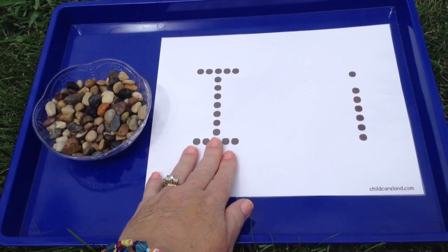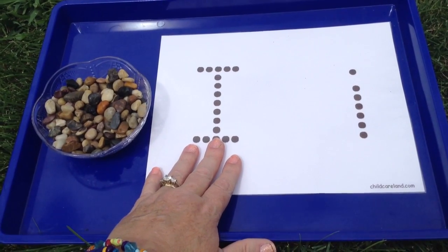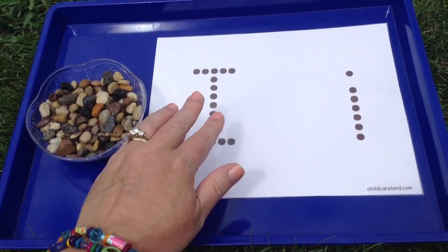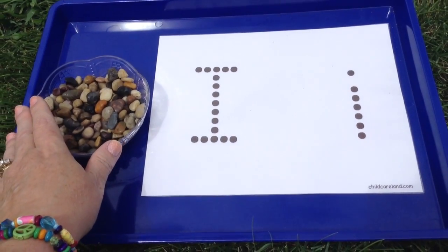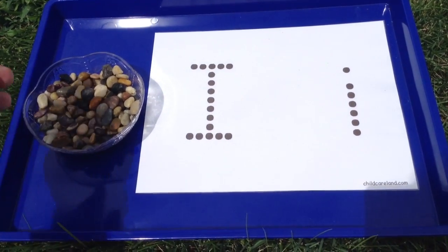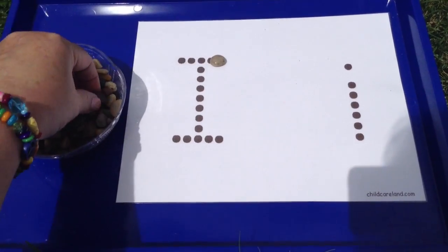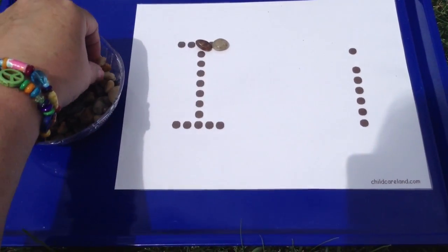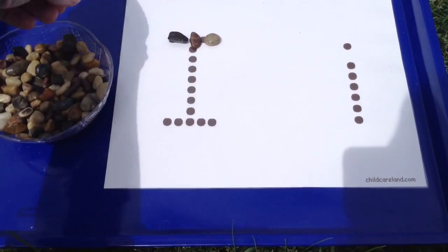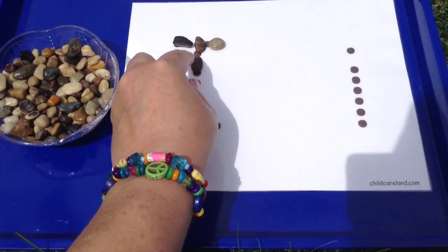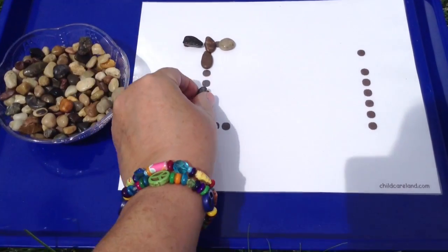So then we have our tracing mat, letter mat, attached to our tray. And then we have a bowl full of rocks. The children would come to the area and begin to pick up their rocks and then fill in the letter or trace the letter with their rocks. Just like so.